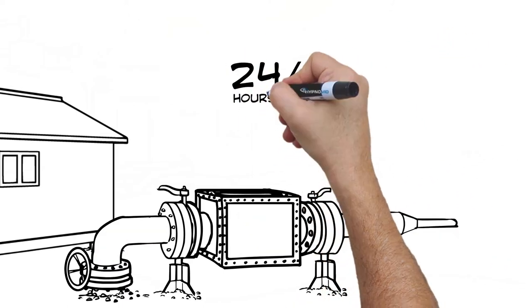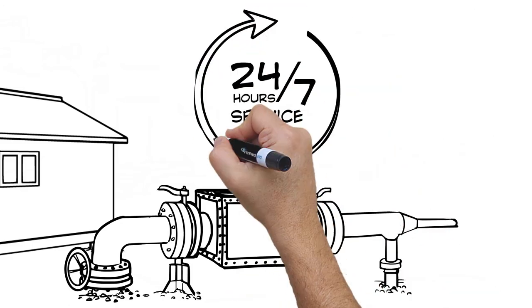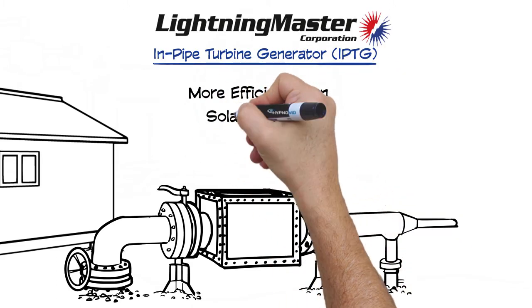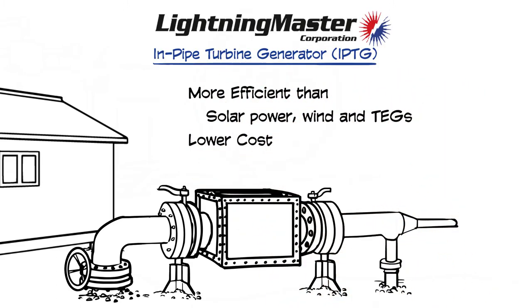The generator is designed to generate power 24 hours a day, with an option for 12, 24, or 48 DC volt output. It is more efficient and half the cost of the alternative sources such as solar, wind and TEGs.